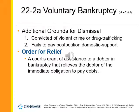The order for relief imposes an automatic stay on all creditors from attempting to recover any money from the debtor. Additional grounds for dismissal include conviction of a violent crime or drug trafficking and failure to pay post-petition domestic support. The order for relief is a court's grant of assistance that relieves the debtor of the immediate obligation to pay debts — ordinarily called the automatic stay.